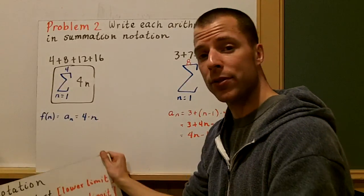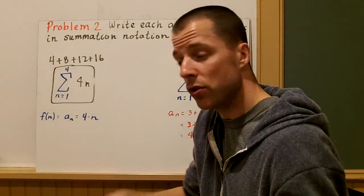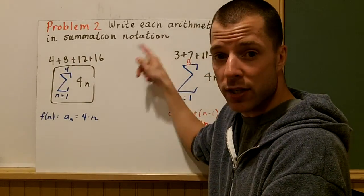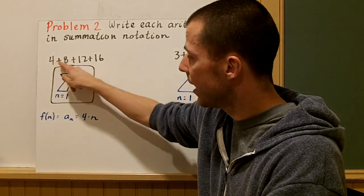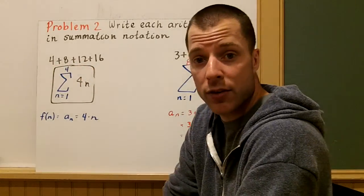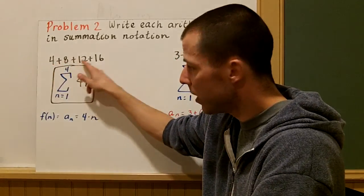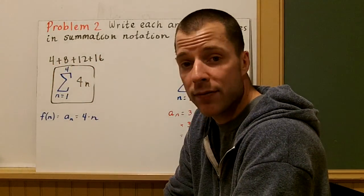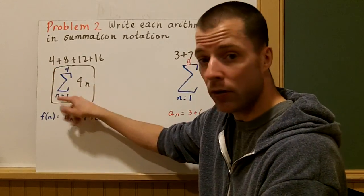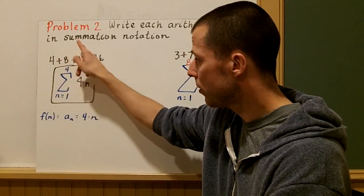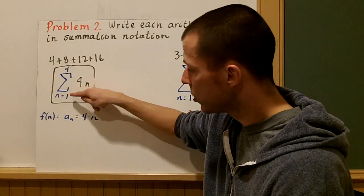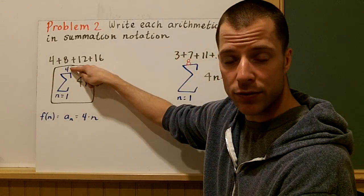Problem number two deals with writing summation notation for two different series. Write each arithmetic series in summation notation. It's a series, and it's arithmetic, because the common difference is the same and we're adding between terms. In this case, 4, 8, 12, 16. The common difference is 4. So where do we start? You might say, oh, we start at 4. No. Let's count the number of terms: 1, 2, 3, 4. We start at the first term and end after term 4. So we go from n equals 1 to n equals 4.